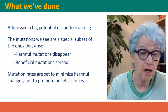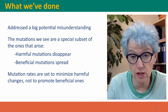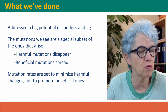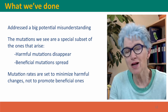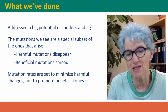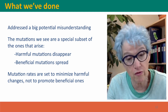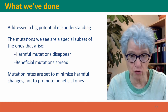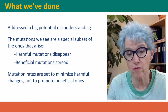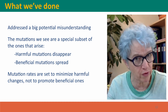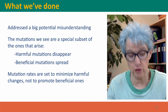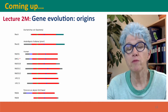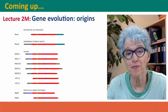The mutations that we see are a special subset of the ones that arise, because harmful mutations are eliminated by natural selection. The mutations that we see are a biased subset containing all the beneficial mutations and a lot of the neutral mutations, but few of the harmful mutations. Finally, mutation rates are set by natural selection to minimize harmful changes, balancing that with the costs of preventing mutations — not to promote beneficial ones. Coming up next, we're going to think about the mutational events that create new genes.